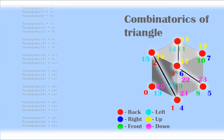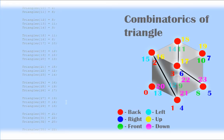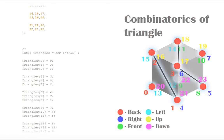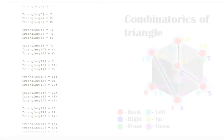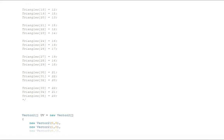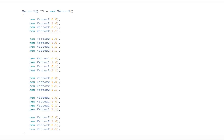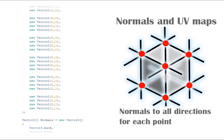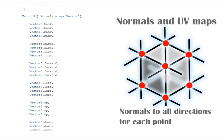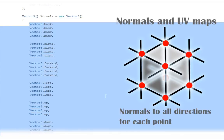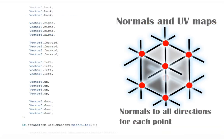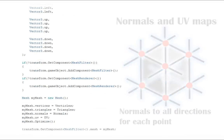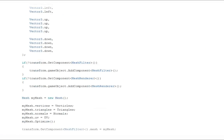Triangles are the second main function to make a cube. Combinatorics is used here — it's the most logical way to make a cube with logical thinking. Normals and UV maps are simply functions that handle displaying textures and shadows.